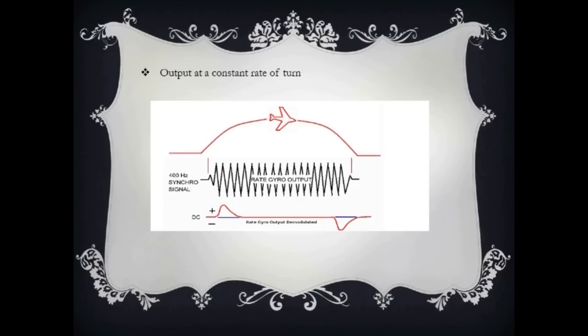Also, notice that there is no output when the aircraft is at a constant rate of turn. Now, as you can see, at the end of the rate gyro output demodulated, there is a negative output. Do you know how it's produced? Well, you guessed it. It's produced when the aircraft from a constant rate of turn at the right to a straight ahead flight. Congratulations.